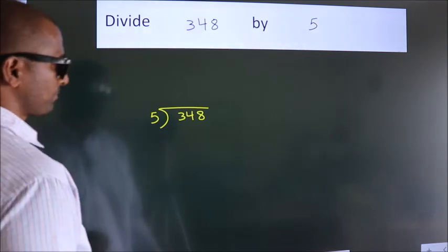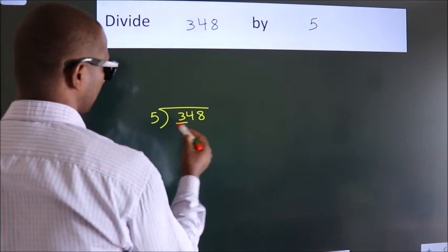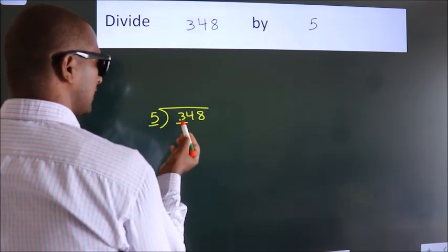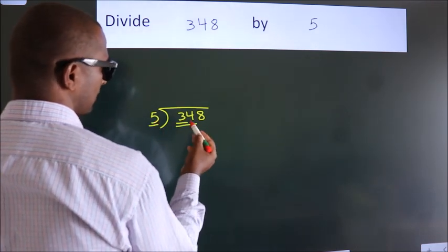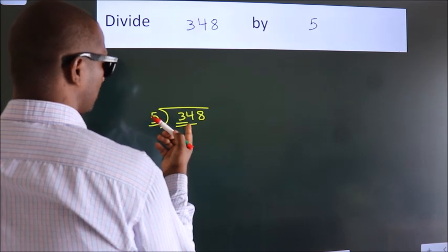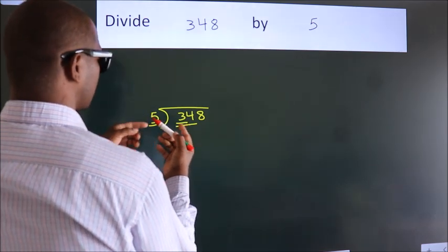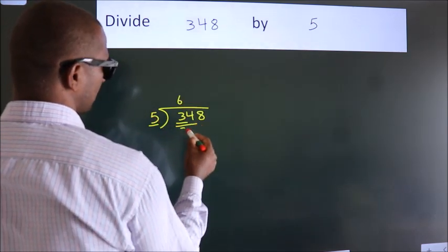Next. Here we have 3. Here 5. 3 is smaller than 5, so we should take 2 numbers: 34. A number close to 34 in the 5 table is 5 times 6, 30.